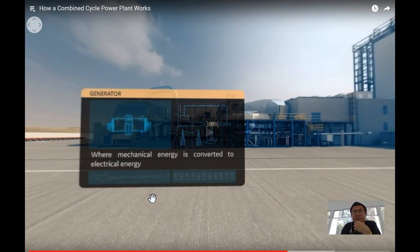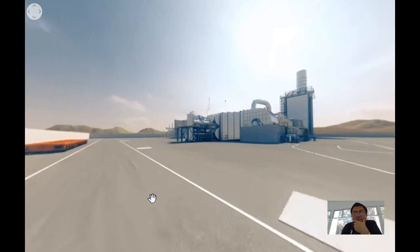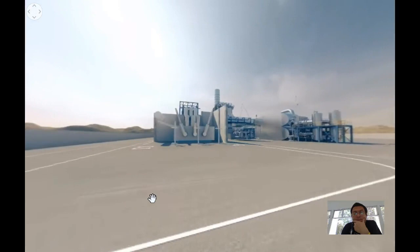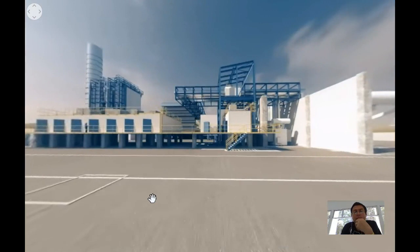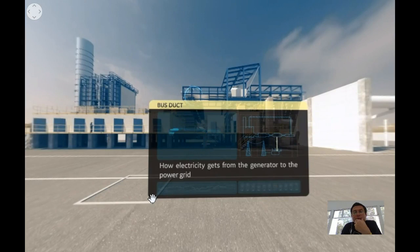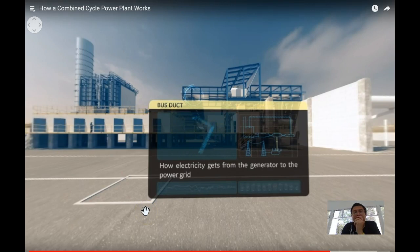Electrical energy. Okay folks, let's continue our tour. Running out from the generator is the bus duct which conducts generated electricity from the generator to a transformer, enabling the electricity to be sent to the power grid to which we connect our homes, schools, businesses - pretty much everything.